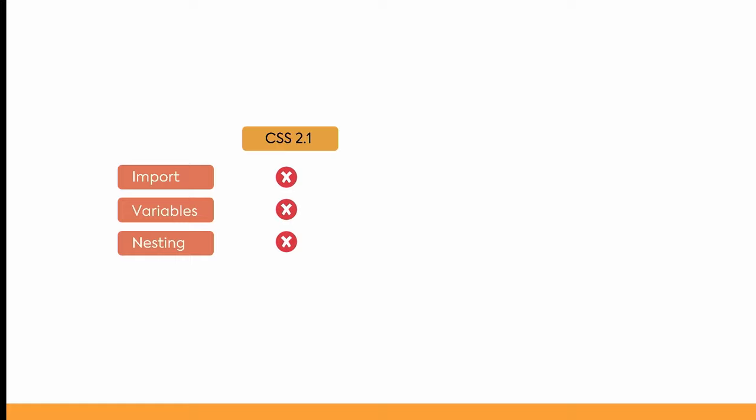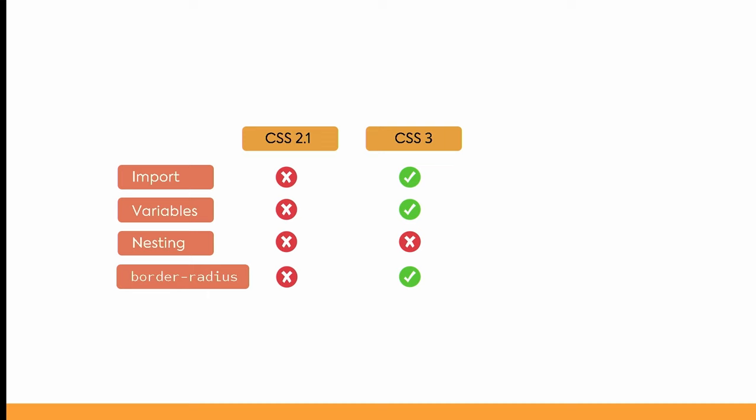Fun fact: it also had no support for border radius, and I'm pretty sure I'm not the only person old enough to have used images to simulate rounded corners. CSS 3, which came later, still did not have support for nesting, which is why we had Sass, which had support for all those things and could be transpiled into CSS.